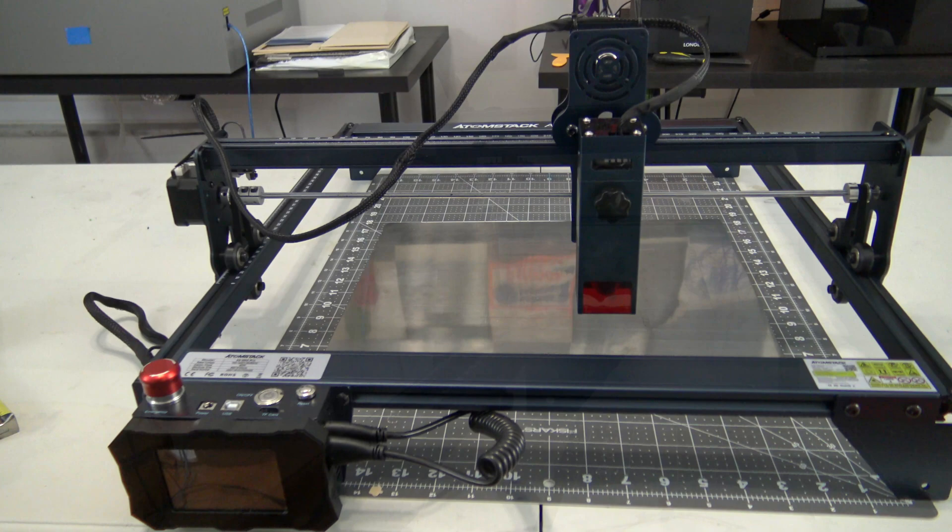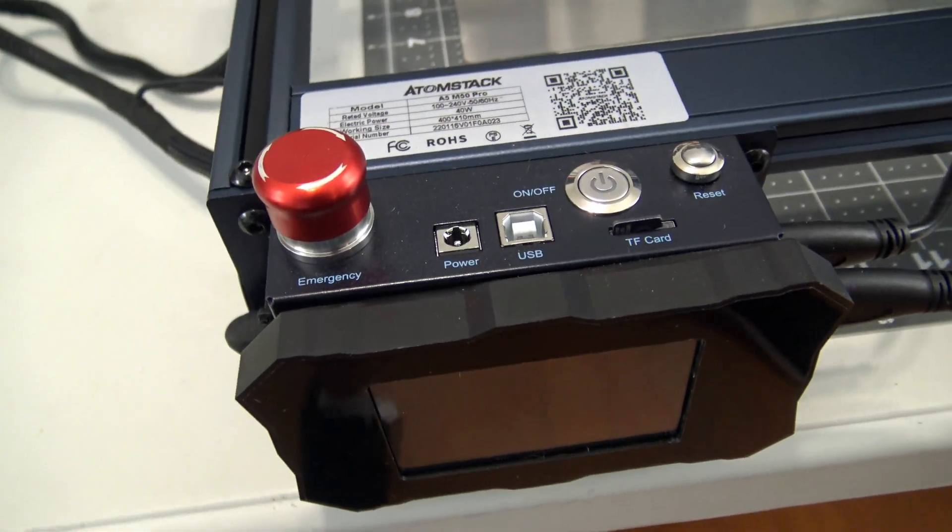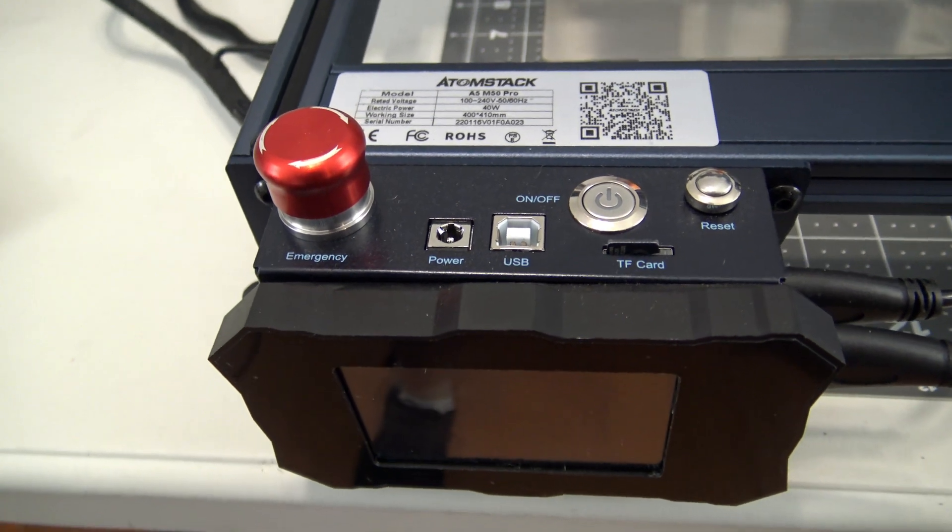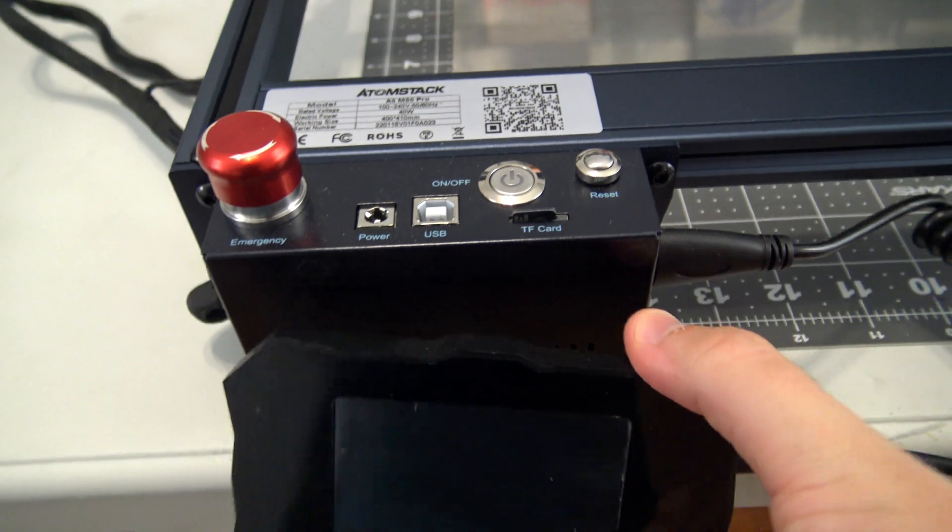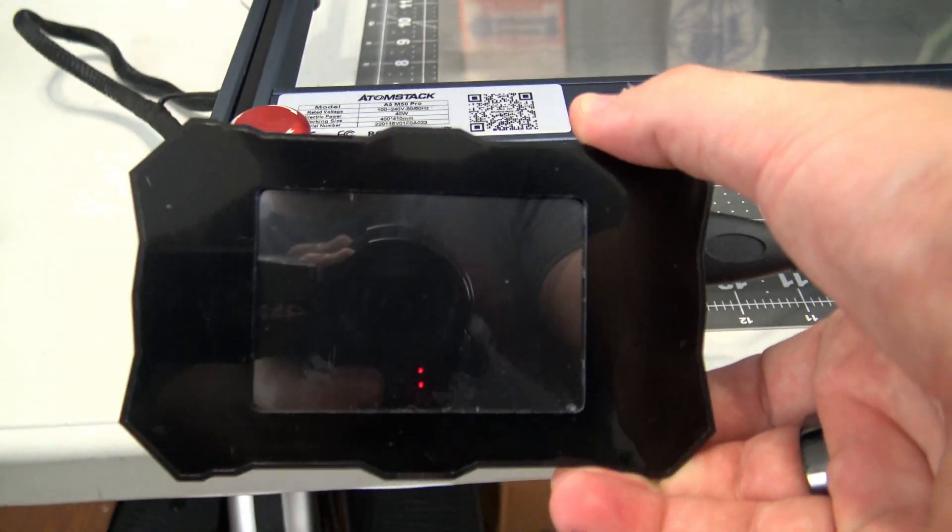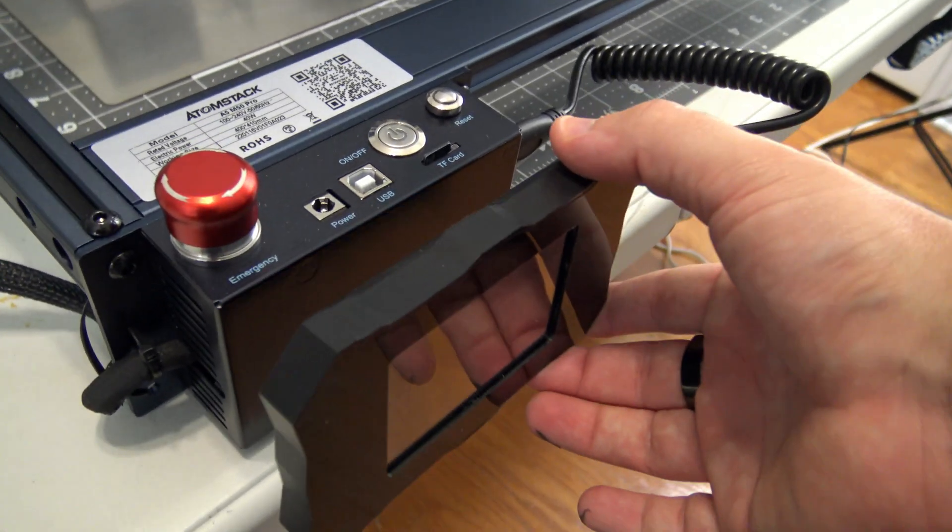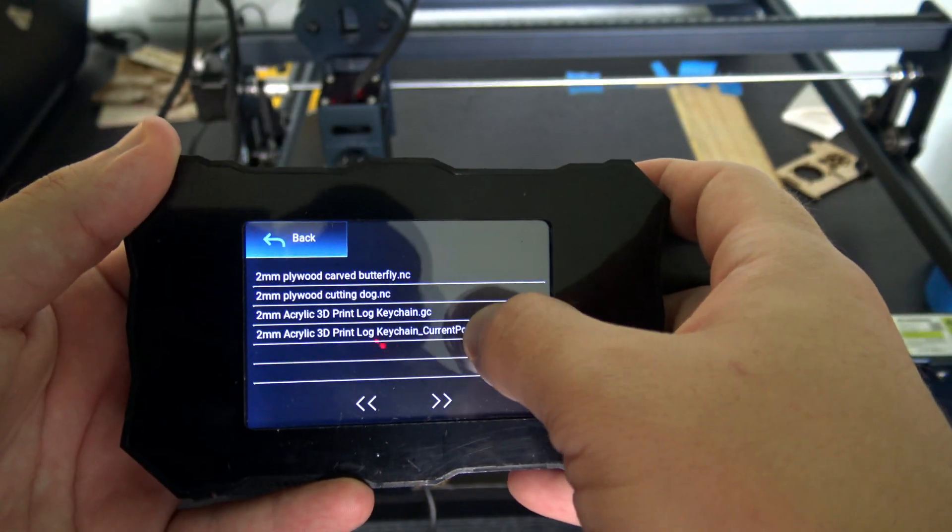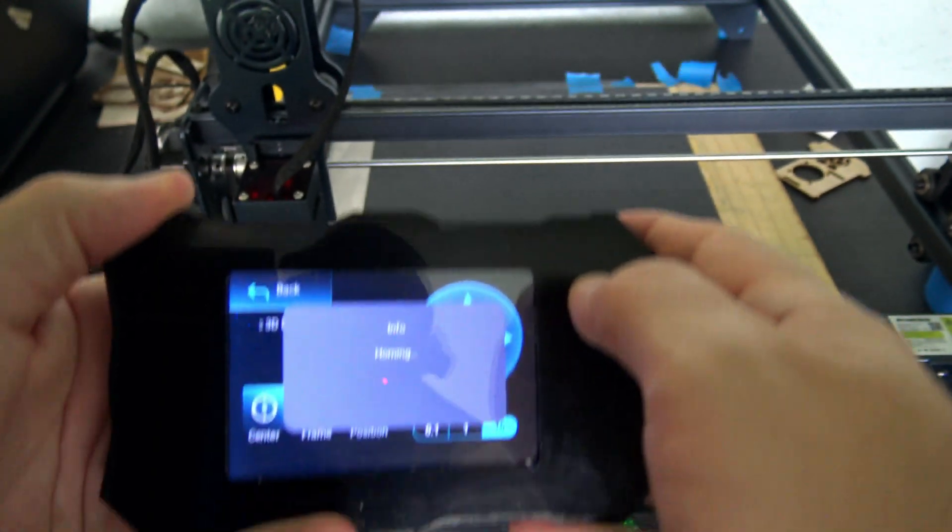The front controller has power and USB connections, as well as a microSD card slot labeled as trans flash. The emergency stop button is important on machines like this and immediately cuts all power when pushed. The front controller has a touchscreen panel which is magnetically attached. This panel allows you to select files to engrave from the microSD card, so you can use the machine without needing a computer attached.